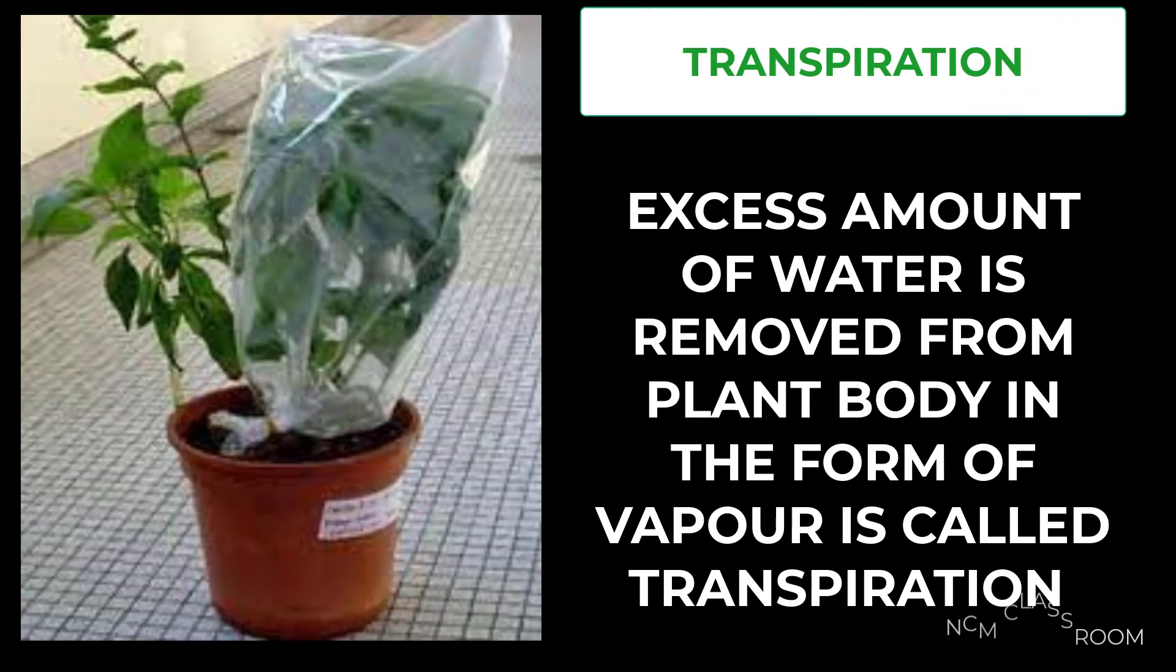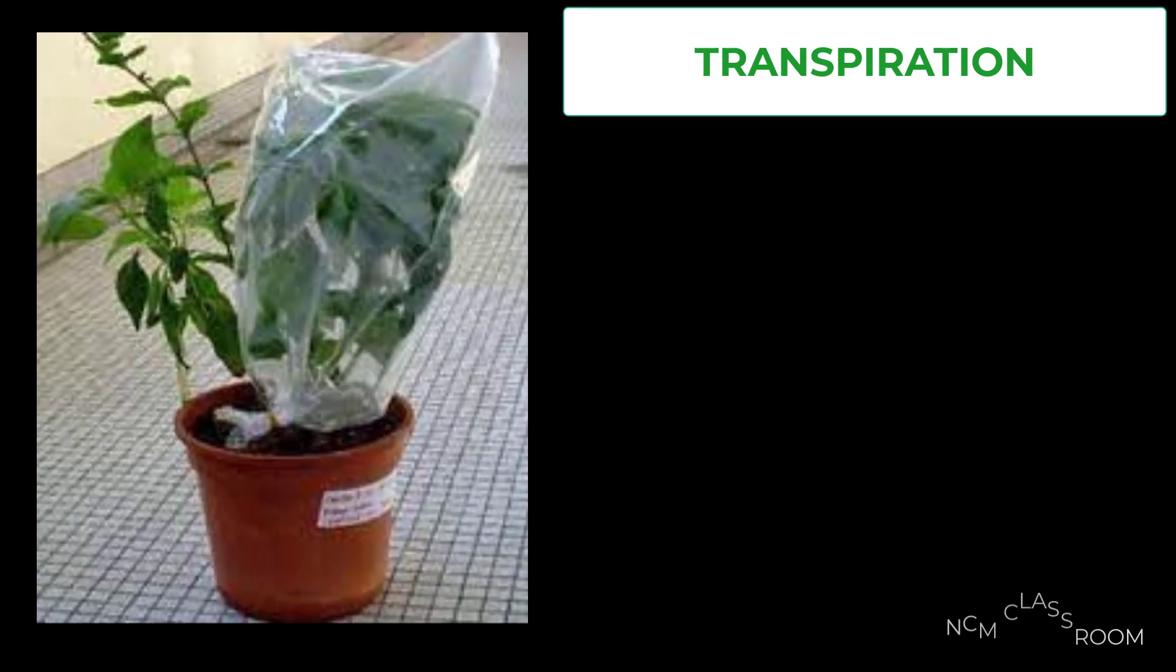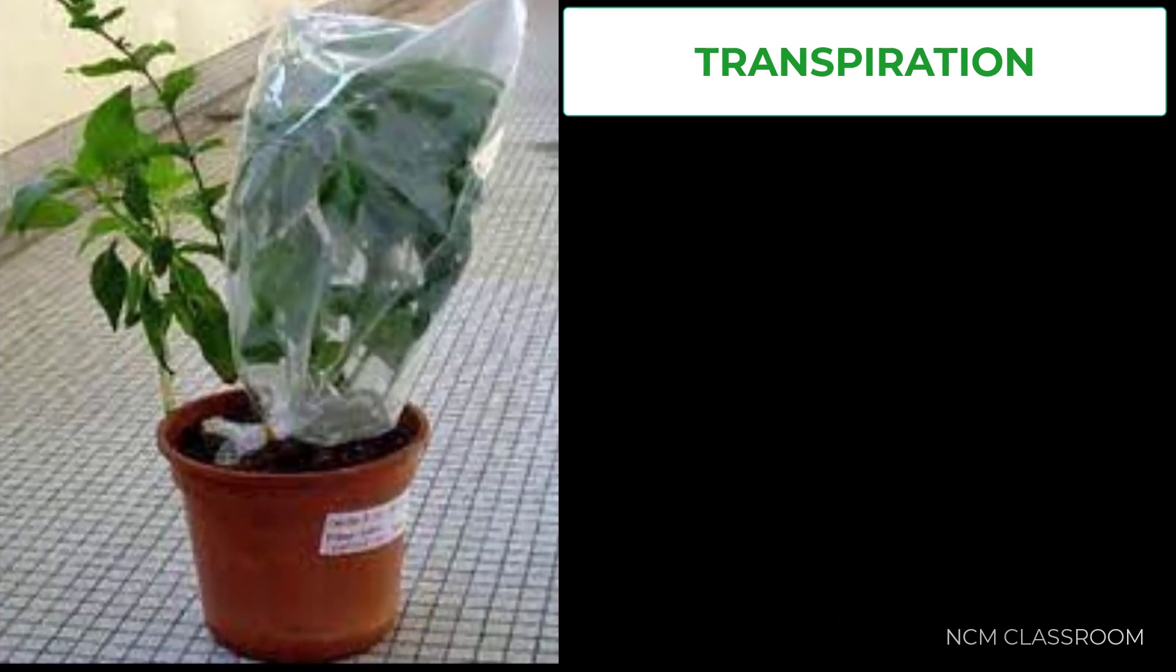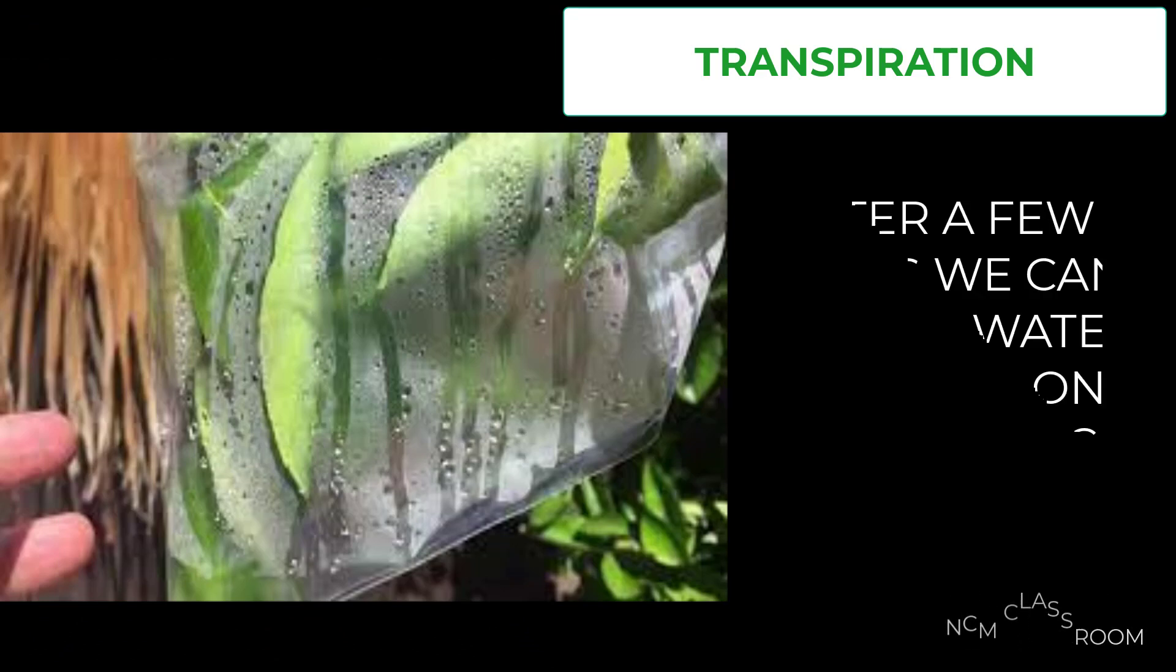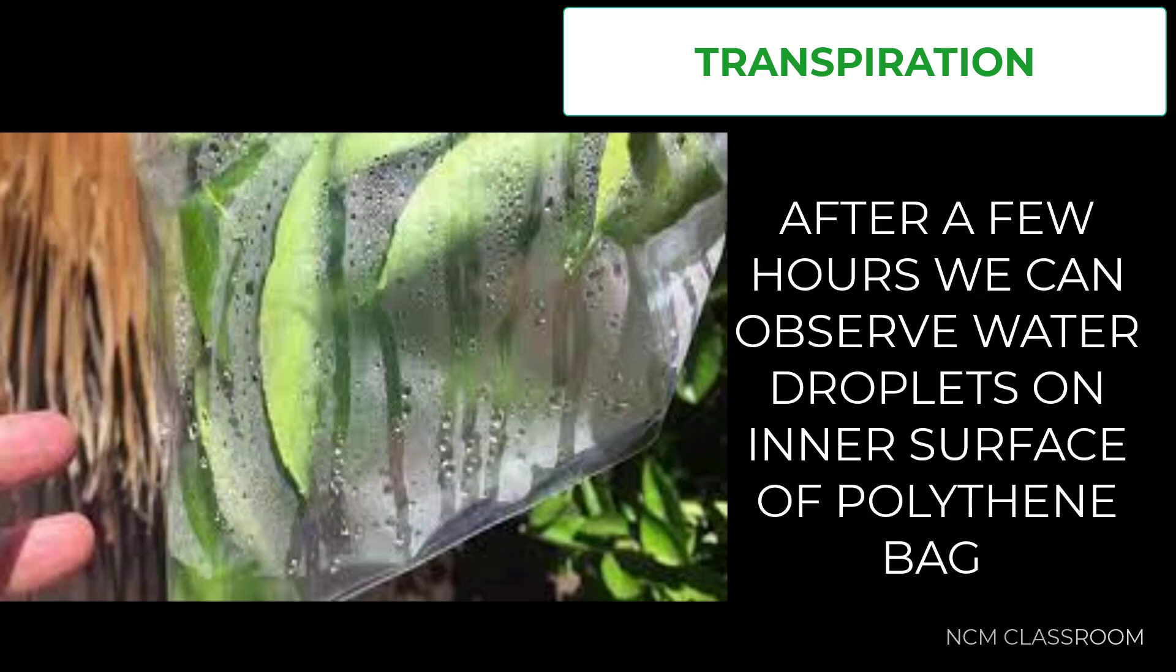And now let us see transpiration. Excess amount of water is removed from plant body in the form of vapor is called transpiration. To understand the concept, first let us take a potted plant and enclose a leaf or a branch of a plant with a polythene bag and tie its mouth. You can observe water droplets inside the polythene bag.